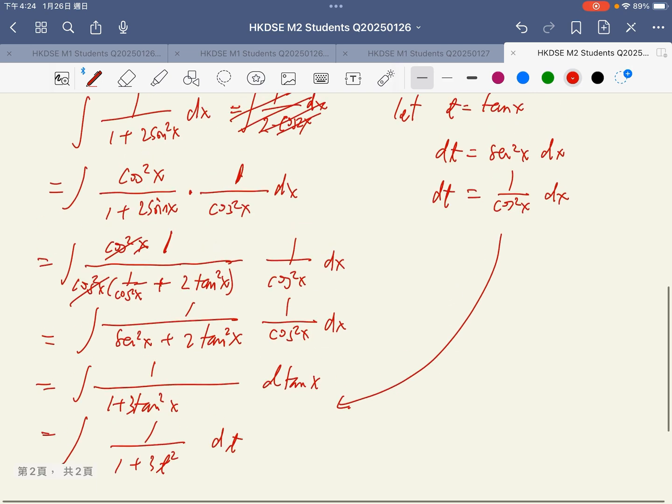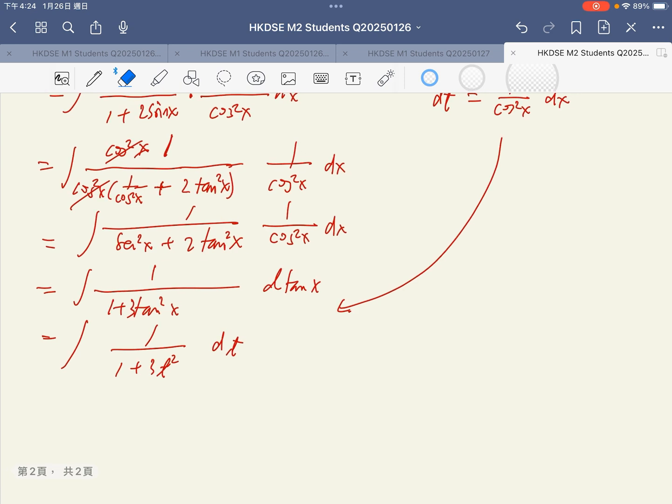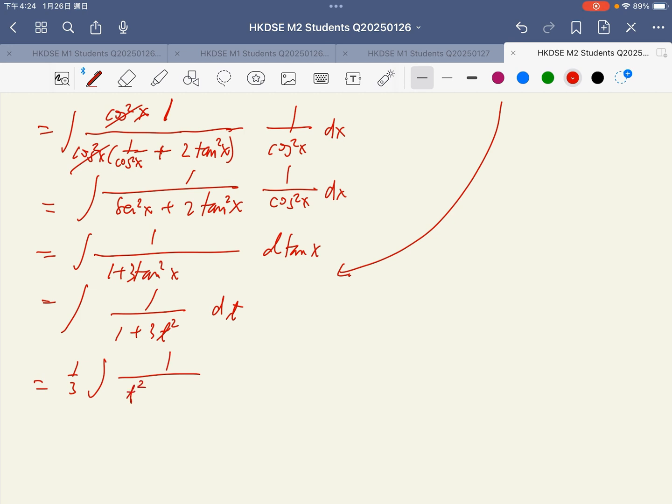You don't need to follow my step, but you can understand what I'm actually thinking. Factorize 1 over 2 outside the bracket. It is t square plus 1 over 2 dt.